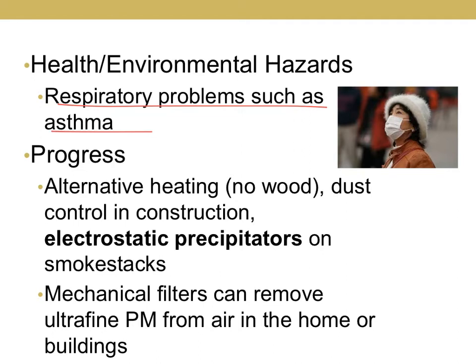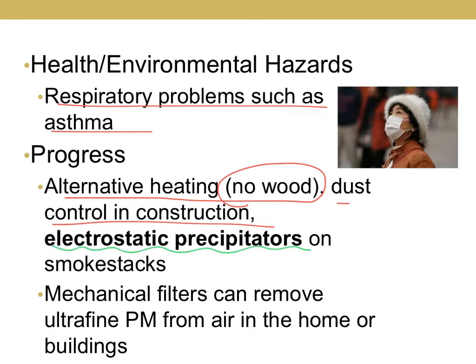How can we improve particulate matter? Wood-burning fireplaces are a big source, so no wood-burning on especially bad air pollution days. In California, when they build new homes, they spray down the bare soil with water, because by law they can't allow that dust to become airborne. You have to memorize specifically that electrostatic precipitators on smokestacks reduce particulate matter — that is a very specific term you must memorize.